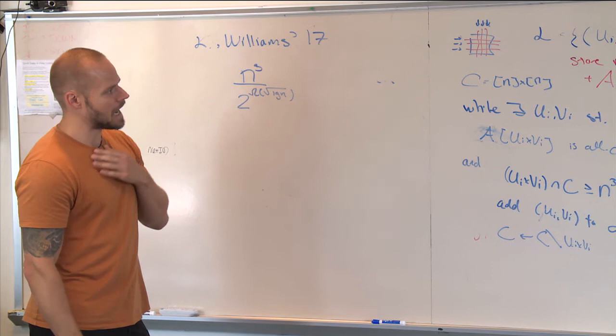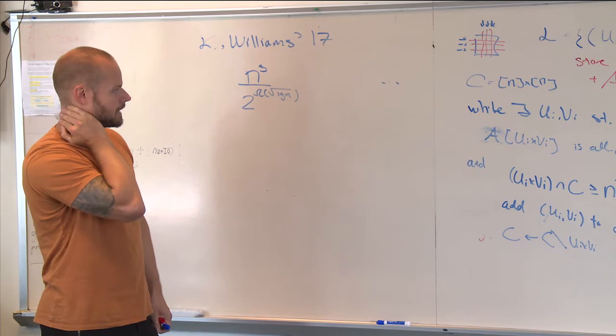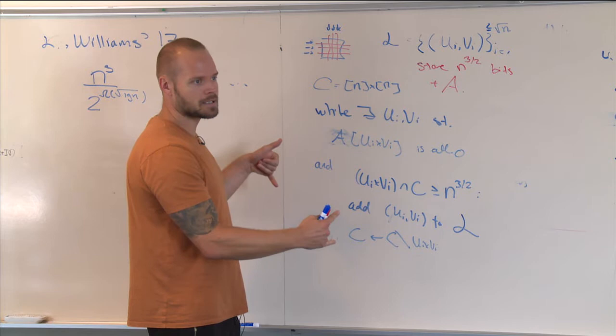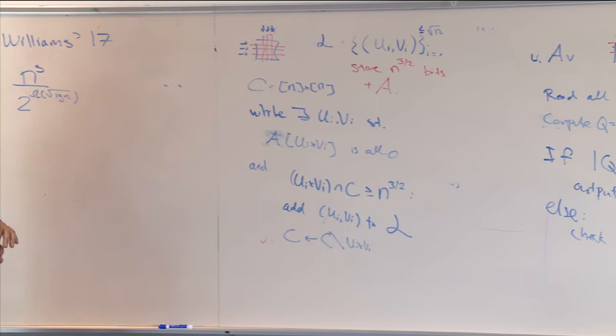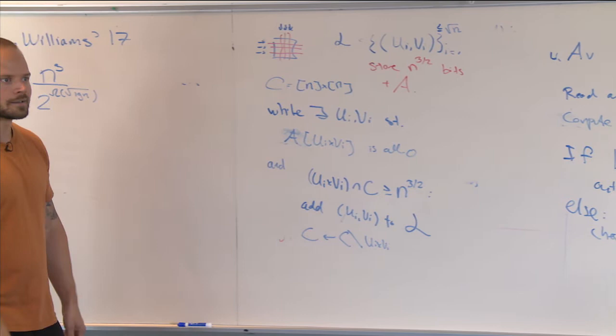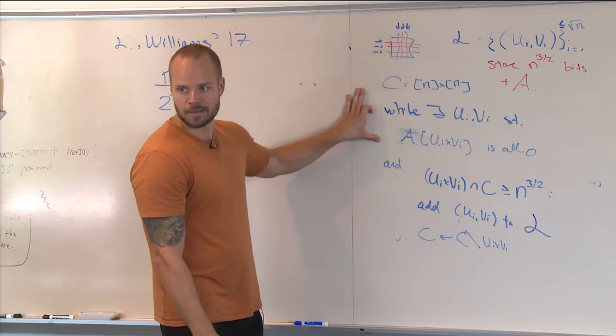Now let's see how to turn this into an actual data structure in the word RAM, where you also have to pay for preprocessing. Things get tricky because first, finding (Ui, Vi) that's all zeros is like finding a large independent set in a bipartite graph — it's bad. You cannot even approximate to a polynomial factor the largest zero submatrix where it has to be large on both sides. So this is completely hopeless — how are we going to find these submatrices?